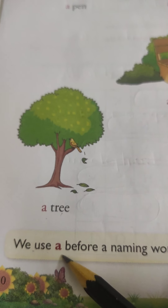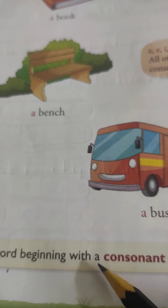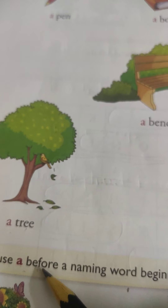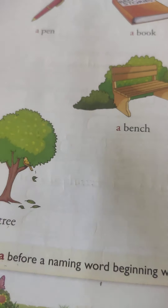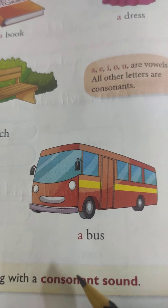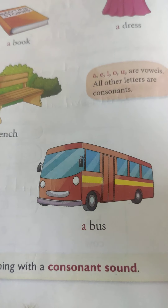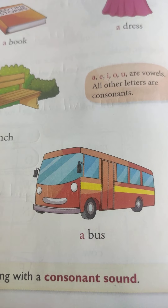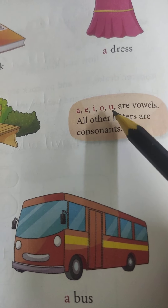We use A before a naming word beginning with a consonant sound. We use A before a noun — a naming word — that begins with a consonant sound. Apart from A, E, I, O, U, all remaining sounds are consonant sounds. And A, E, I, O, U are vowel sounds.